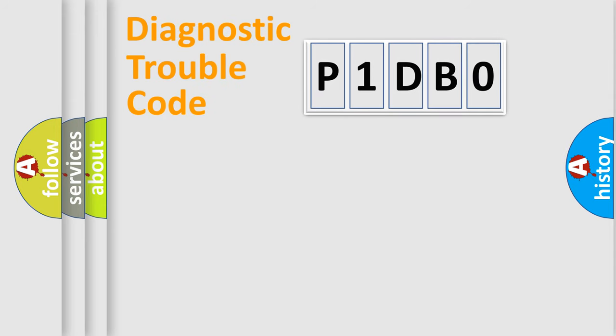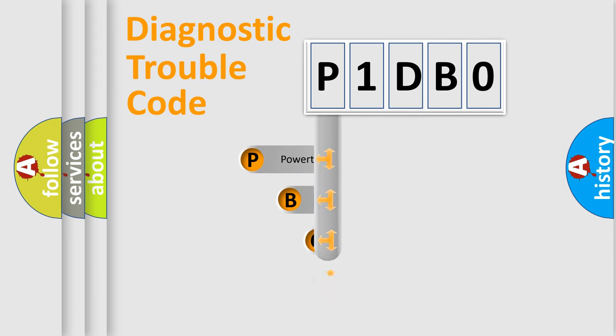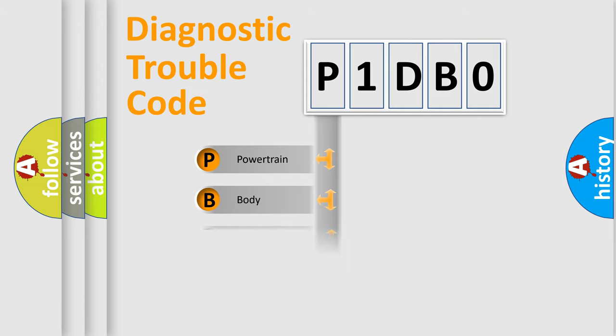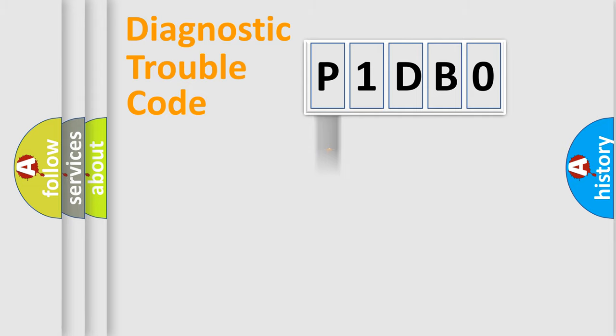Let's look at the history of diagnostic fault code composition according to the OBD2 protocol, which is unified for all automakers since 2000. We divide the electric system of an automobile into four basic units: Powertrain, Body, Chassis, and Network.